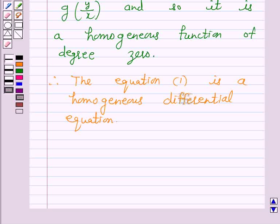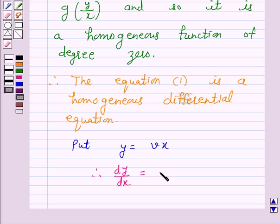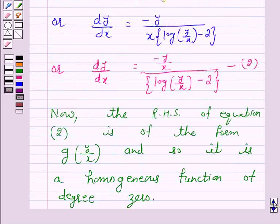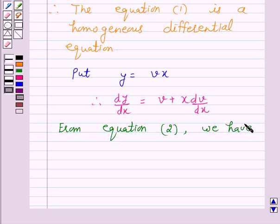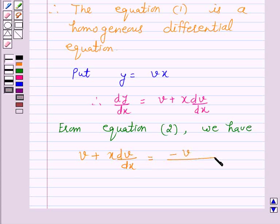To solve this equation we will put y equals vx, so v equals y/x, and therefore dy/dx equals v plus x dv/dx. On substituting the values of y and dy/dx in equation 2, we have: v plus x dv/dx equals minus v over (log v minus 2).